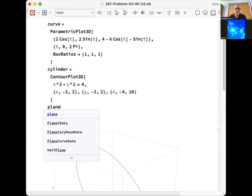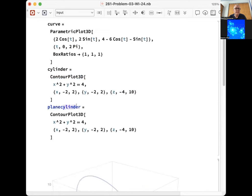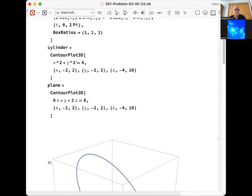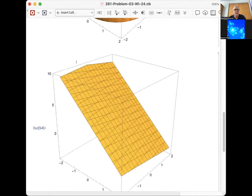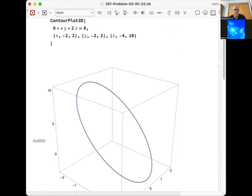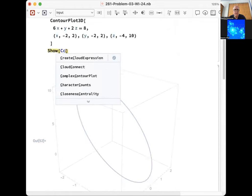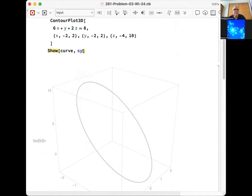Let's say the plane is, get rid of the word cylinder. And contour plot that plane equation that we discovered is 6x plus y plus 2z double equals 8. Let's use the same box right there. So now I've got curve, cylinder, plane. Let's put them all together with the show command. Show, curve, lowercase c I used. Cylinder, plane.